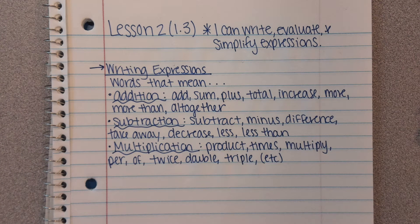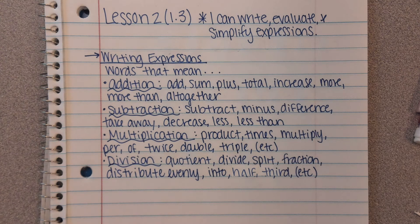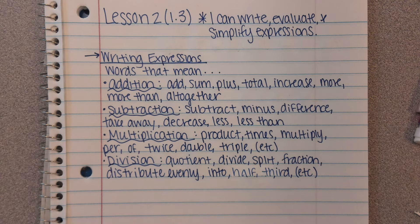For multiplication, we have: product, times, multiply, per, of, twice, double, triple — and we could keep going: quadruple, quintuple, et cetera. Usually after triple it'll just say the number, like four, five, six. For division, we have: quotient, divide, split, fraction, distribute evenly, into, half, third — and again we could keep going: fourth, fifth, sixth, seventh, and so on. Usually after third it's just the number or a different phrase.